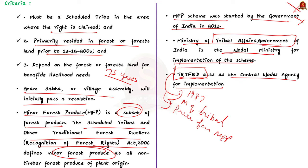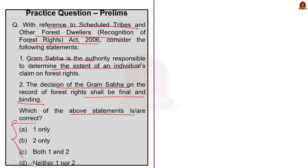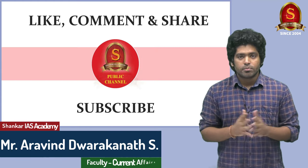With reference to the Scheduled Tribes and Other Forest Dwellers Act 2006, consider these statements: Gram Sabha is the authority responsible to determine the extent of an individual's claim on the forest right; the decision of Gram Sabha on the record of forest rights shall be final and binding. The correct answer is option A: one only. Statement one is correct. Statement two is incorrect because any person aggrieved by the Gram Sabha's resolution may appeal to the Sub-Divisional Level Committee, then to the District Level Committee. The decision of the District Level Committee on records of right is final and binding. All the very best for this year's prelims!